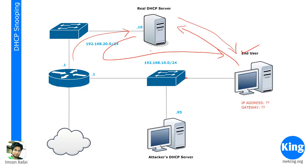The DHCP server sends an offer with an IP address, this device communicates with that server, and then the server acknowledges that the IP address has been accepted. If the real DHCP server assigns an IP address, it would be in that range — say 192.168.10.10 — and the gateway would be .1, which is the ideal gateway as it is the exit point for the network to access the internet or other networks.